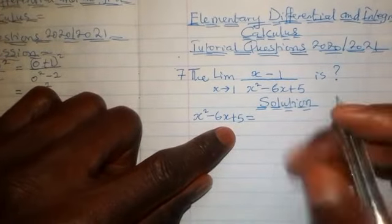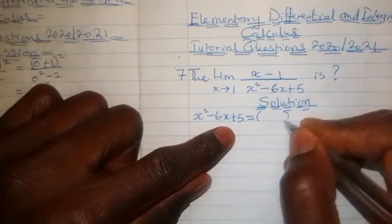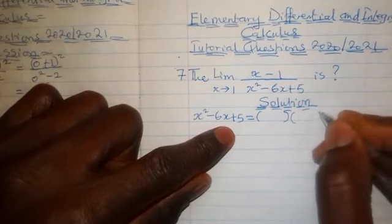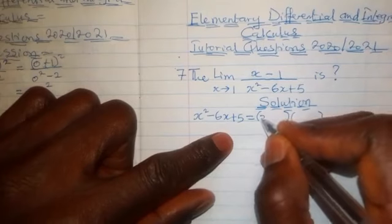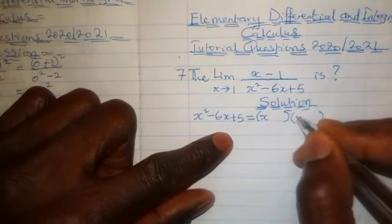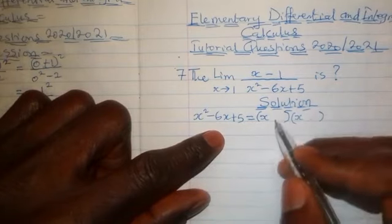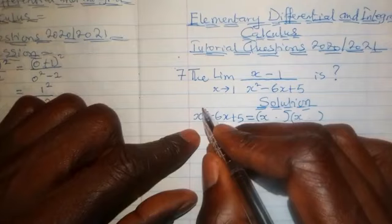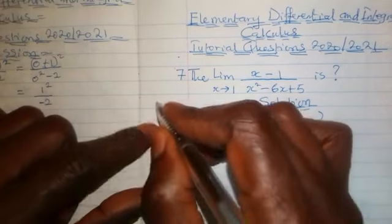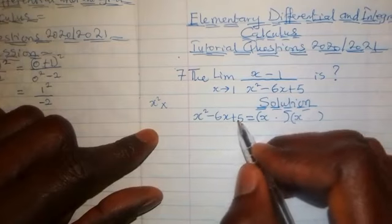Now since we know we are going to use the factor method, we have to introduce our brackets here, and then we have x² in the first term in the bracket, we have to put our x and our x. Now how do we get the remaining factors in the bracket? All we have to do is to take this x², x², and multiply it by 5.